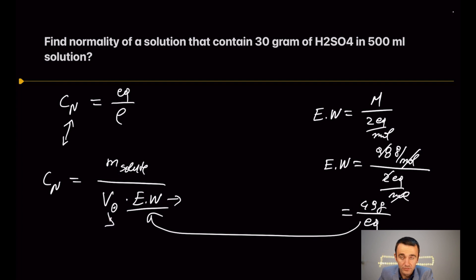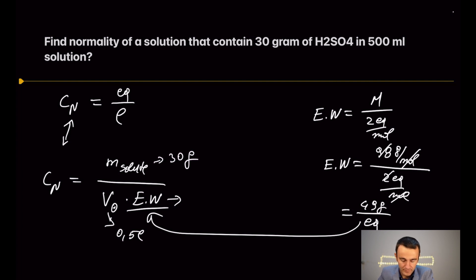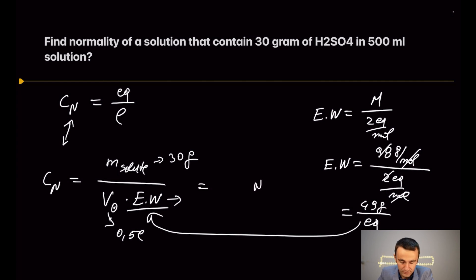The volume of the solution needs to be in liters, so it is 0.5 L, and the mass of the solute is 30 grams. From here we can find the normality of this solution.